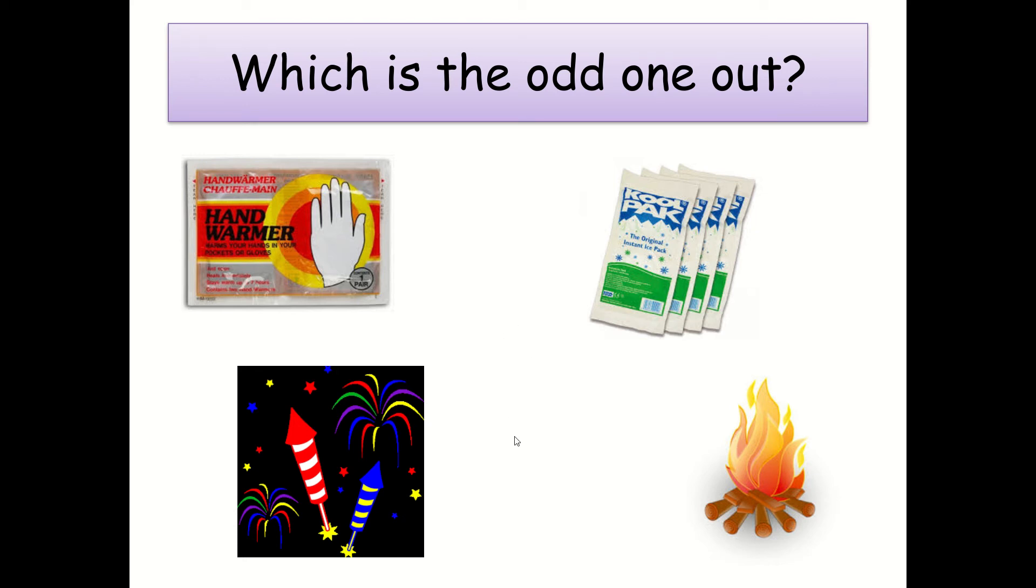Right, now the odd one out hopefully that you got is this one here, the cool pack. And the reason it's the odd one out is because these other three, they're all chemical reactions, these give out heat. This one does not. It's the opposite. And it's these types of reactions that we're going to be focusing on.